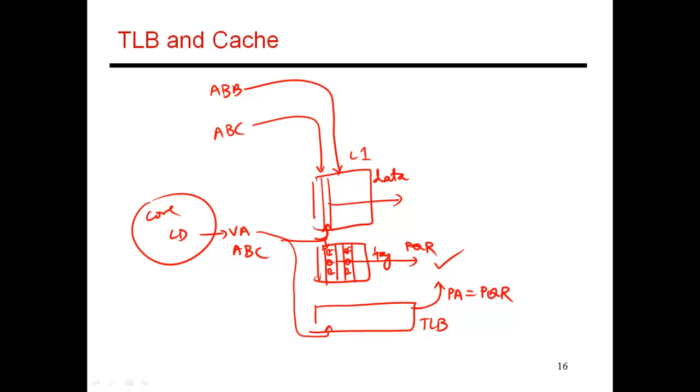So when thread one brings in the data, it brings in the data over here and keeps the tag over here. When the second thread looks for ABB, it perhaps maps to a different set, and it brings its own cache copy and places it over here. So again, you have this problem where there are duplicate copies of the same block in cache.